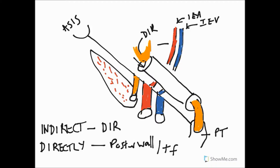With an indirect hernia, notice the relationship is that it is lateral to the inferior epigastric vessels. So an indirect hernia goes through the deep inguinal ring, is lateral to the inferior epigastric vessels, and the herniated sac can protrude through the superficial inguinal ring.